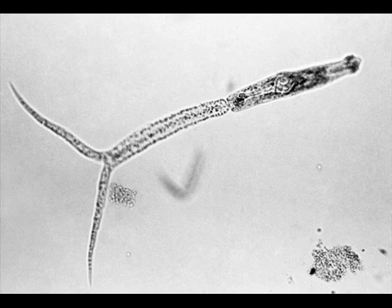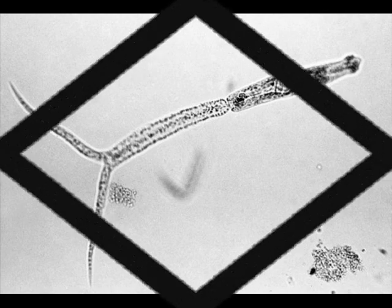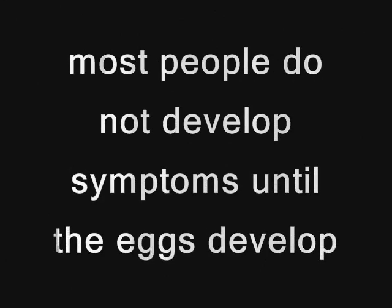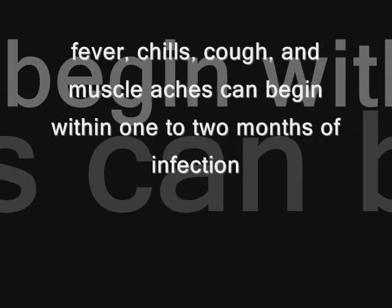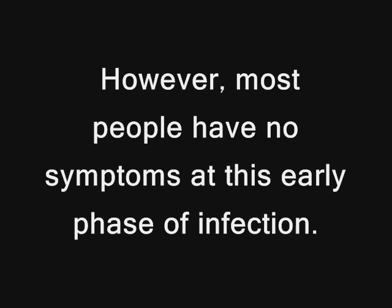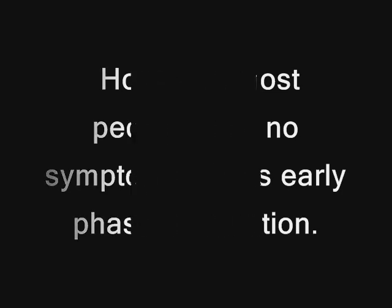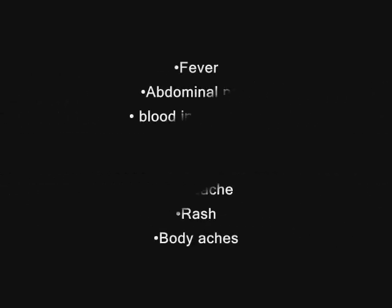Chronic symptoms are mainly due to eggs that are not shed from the body. Complications related to the disease are thought to occur due to long-term exposure to the highly antigenic eggs. Although a few patients may have minor skin irritation when the cercariae enter the skin, most people do not develop symptoms until the eggs develop. Fever, chills, cough, and muscle aches then begin within 1 to 2 months of infection. However, most people have no symptoms at this early phase. Unfortunately, a few patients develop acute Schistosomiasis during the 1 to 2-month period, and their symptoms resemble those for serum sickness.